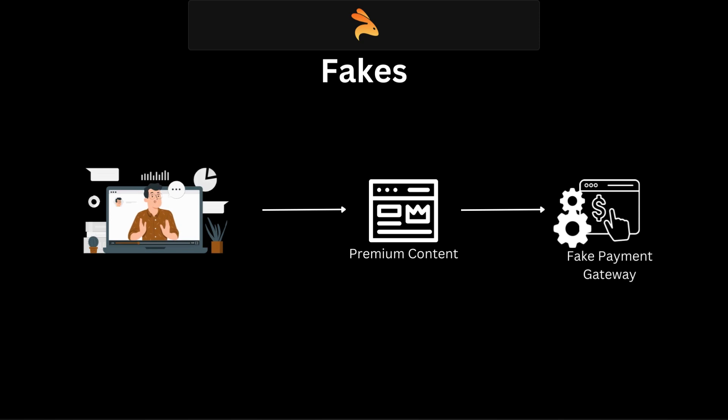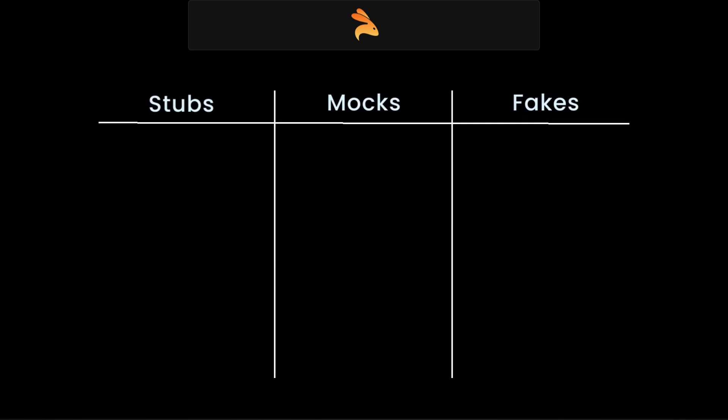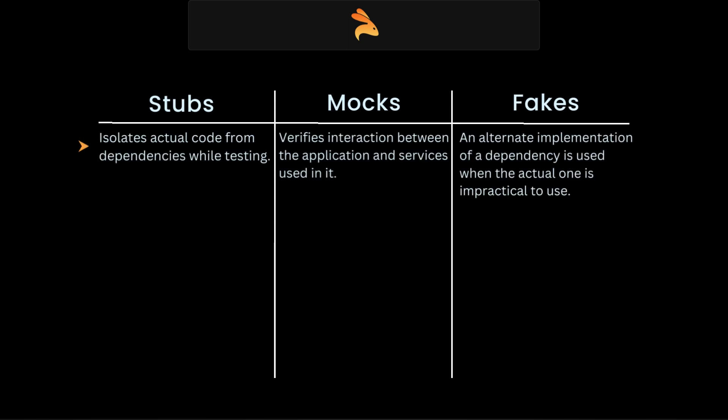It's hard to implement a fake, but it helps in improving the test performance. Let's recap and list the points of differentiation in a tabular format. Stubs are used to isolate actual code from dependencies while testing, whereas a mock verifies interaction between the application and services used in it, and fakes are an alternate implementation of a dependency used when the actual code is impractical to use.